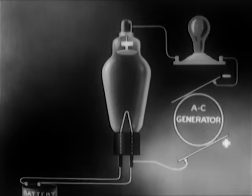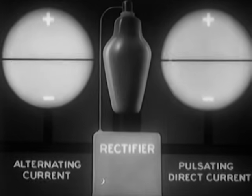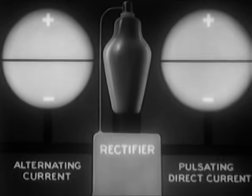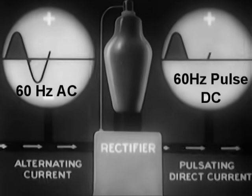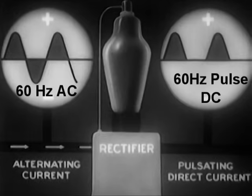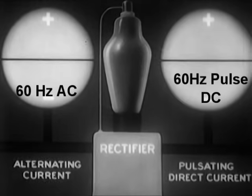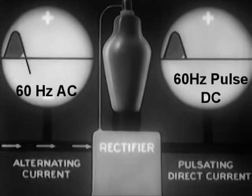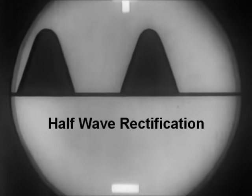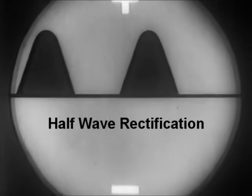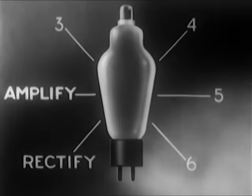We can visualize the result of the tube's rectifying action with the aid of these two oscilloscopes. The one on the left shows alternating current coming in. The one on the right shows pulsating direct current going out. The applications of this basic rectifying principle are many and important. The second basic thing we can do with it is amplify.